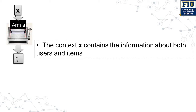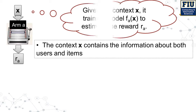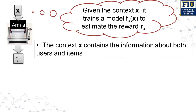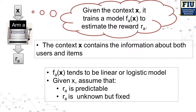The information from both users and items is referred to as a context. Given the context, a model is trained to estimate the reward. The reward predictions are often achieved by a linear or logistic regression model.